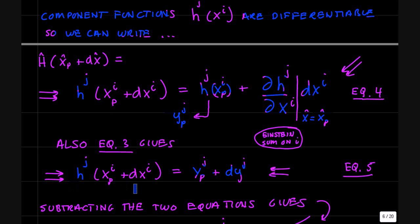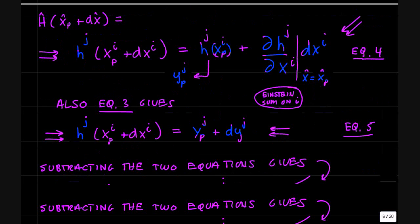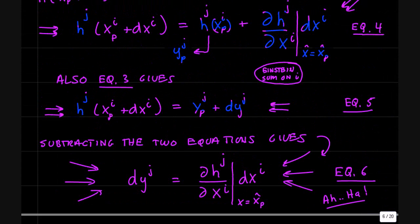So we have two equations here for h_j at x plus dx. And so we can subtract these two, and you get an equation for dy^j. So the action of the function h on the local space of differentials gives you dy as a linear function of the differentials dx.